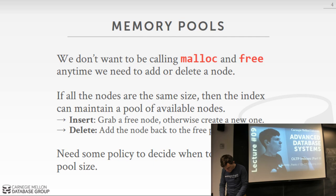The easiest solution is memory pools or object pools. If all nodes in our index are the same size, then any time we delete a node, instead of freeing the memory back to the allocator, we put it into a memory pool. When someone needs to insert a new node, we just reuse the old one. This is really easy if your nodes are fixed-length or a small number of fixed-length sizes. For completely variable-length sizes, you might just call malloc and let the allocator handle it. On insert, you grab a free node or create one; on delete, you just add it back.